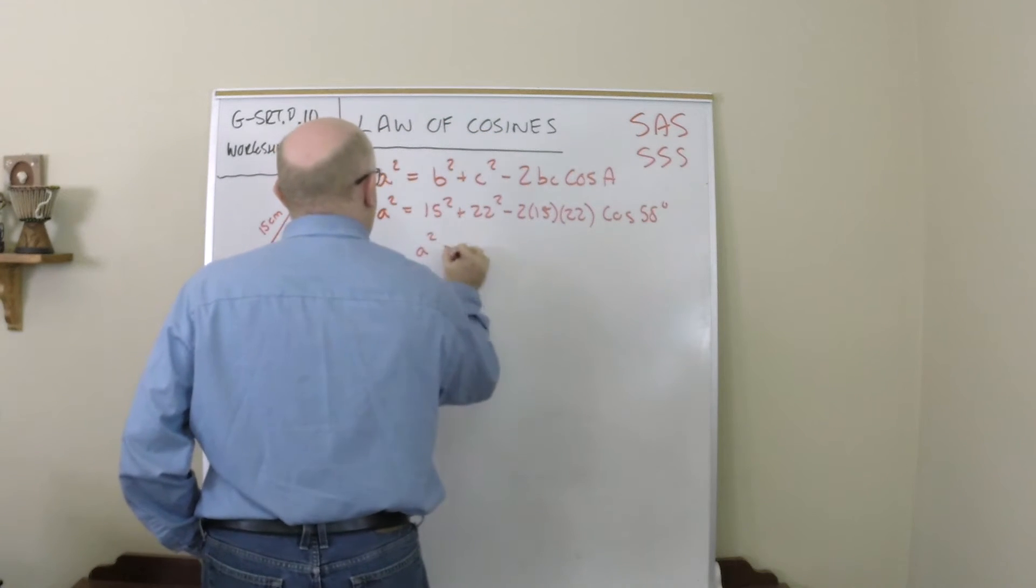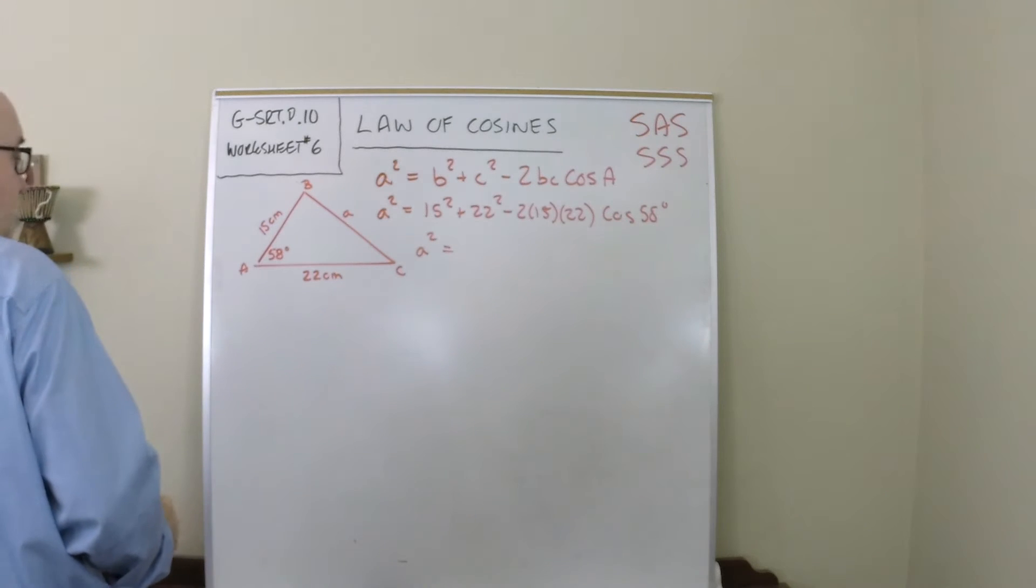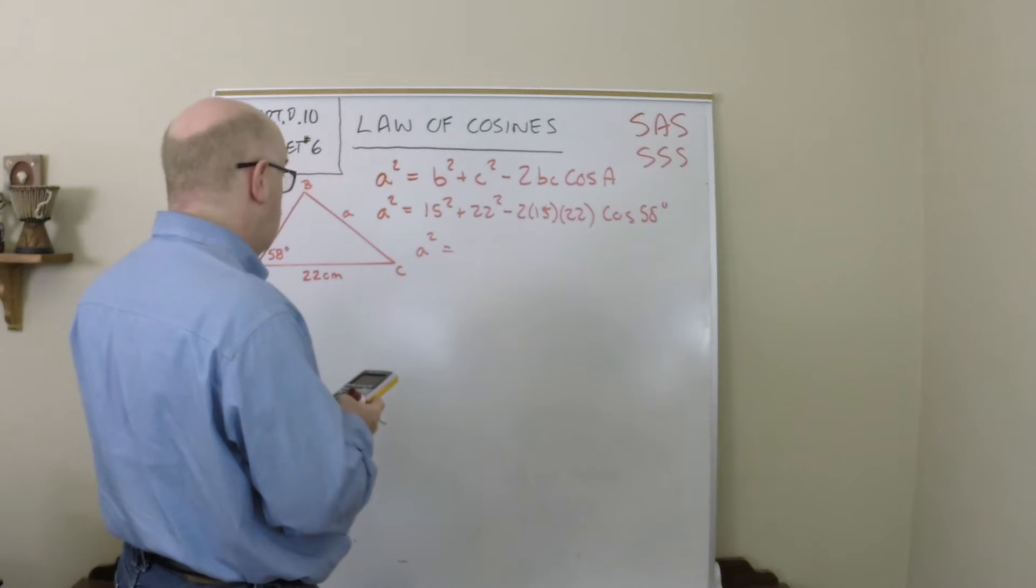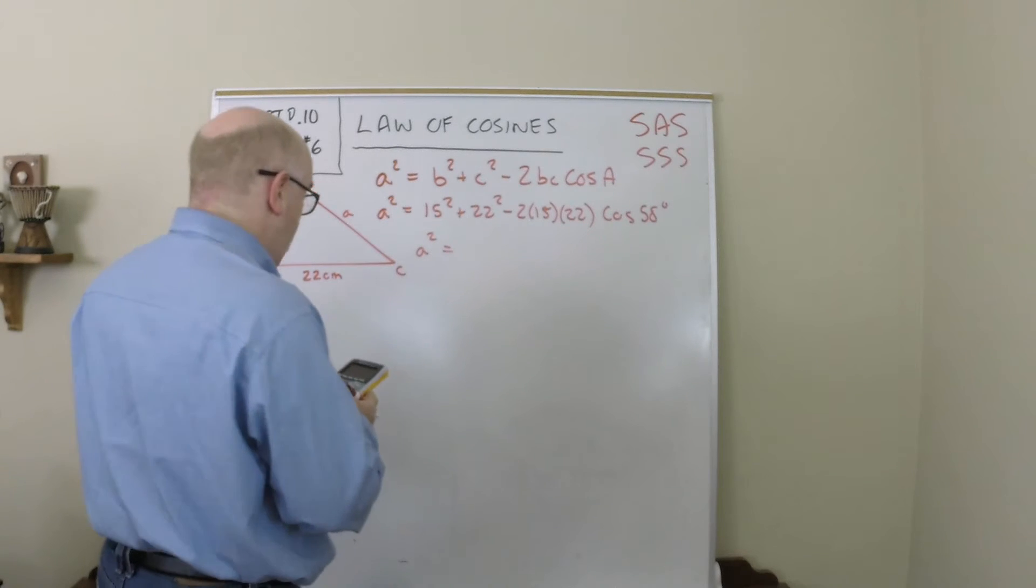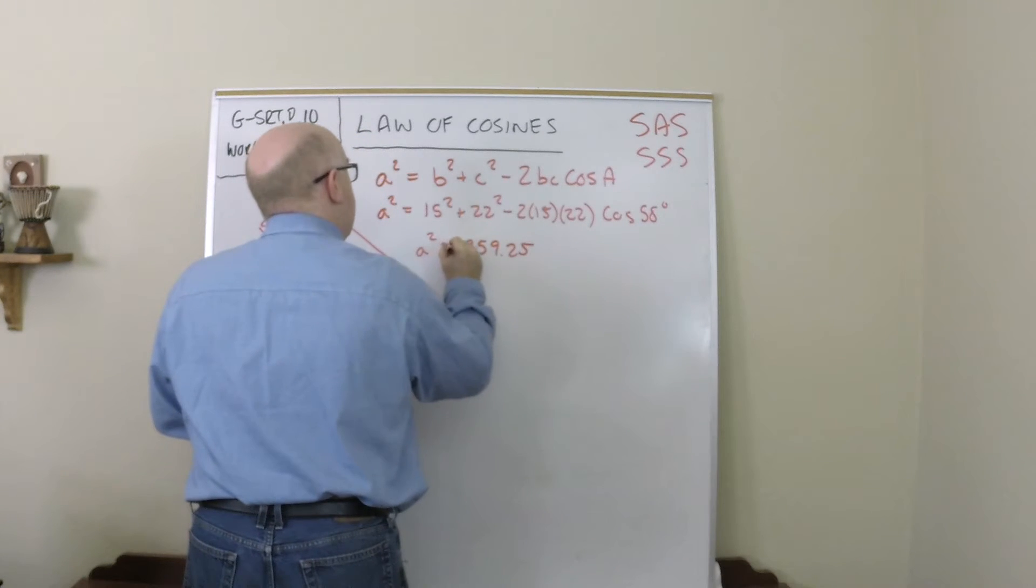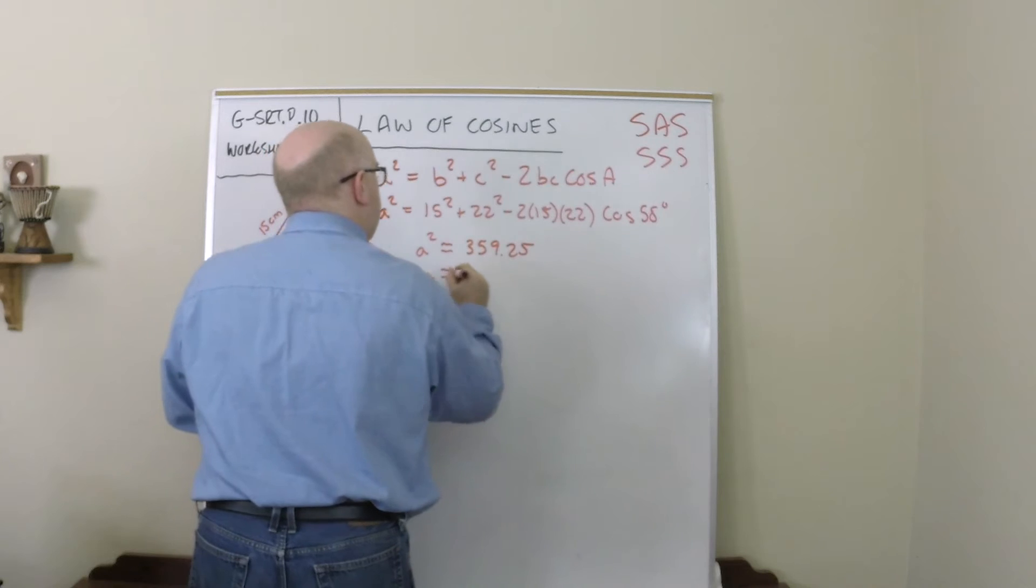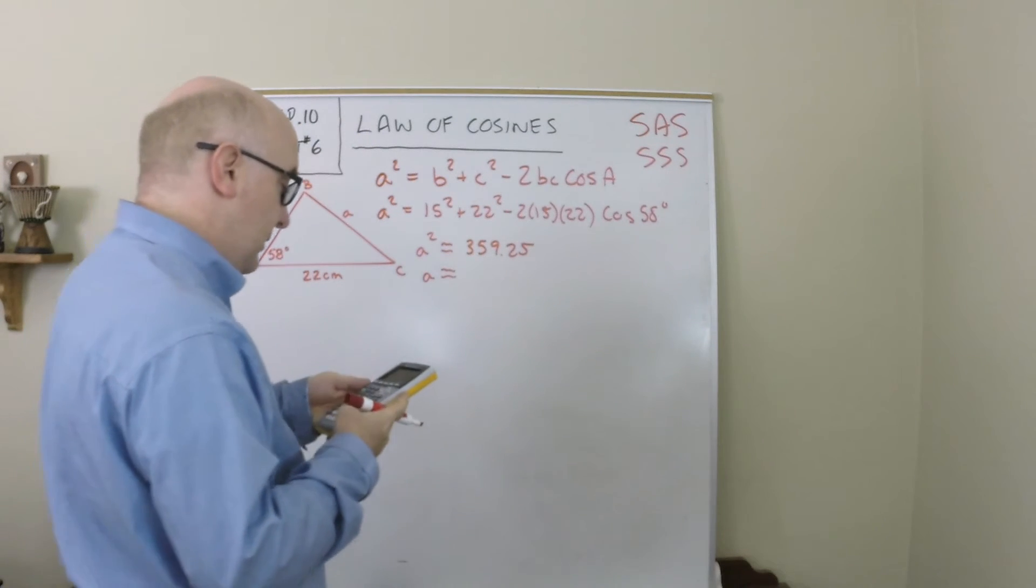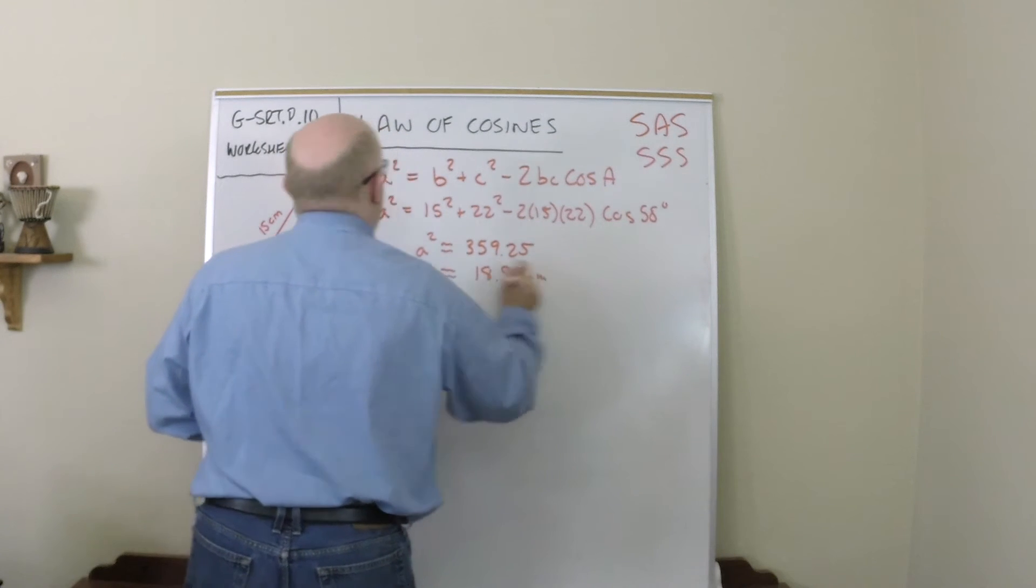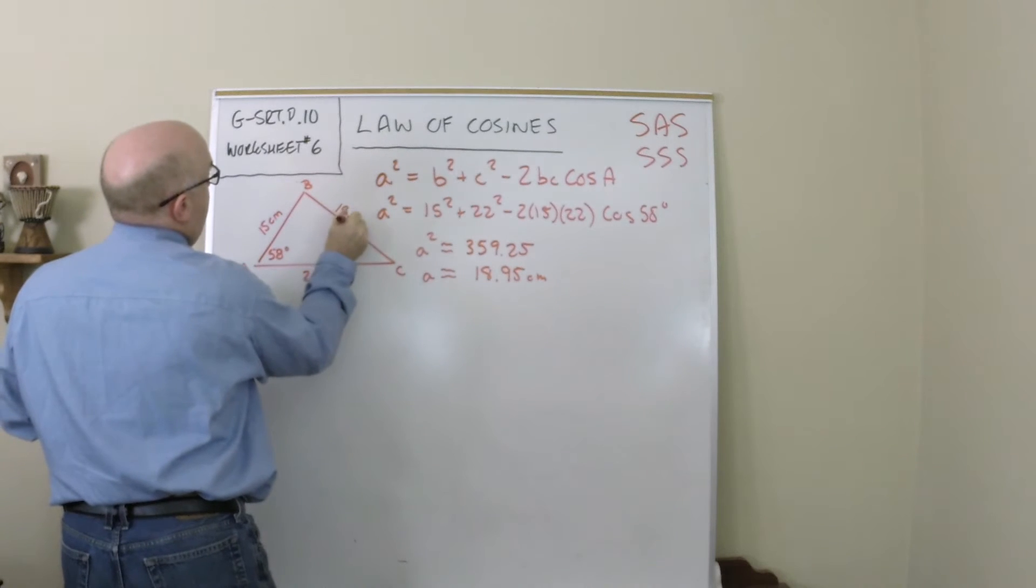Now without much work all of that actually can just be placed into the calculator. And this gives me something in this form and then I can take the square root of that value and I get about 18.95.